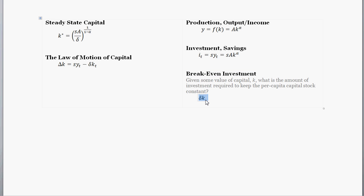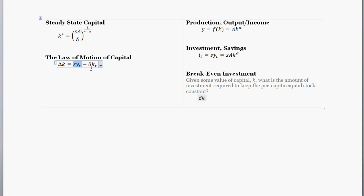What is breakeven investment? Suppose we have some value of capital per worker and we wanted to keep that value constant — not the steady state value, just asking what investment is required to keep the capital stock constant from one period to the next. The only thing that really destroys capital from one period to the next is depreciation. So if we wanted to keep the capital stock constant, the amount of investment needs to perfectly offset the amount of capital that's been depreciated. Given any value of capital, the breakeven investment required is going to be depreciation times the capital stock.